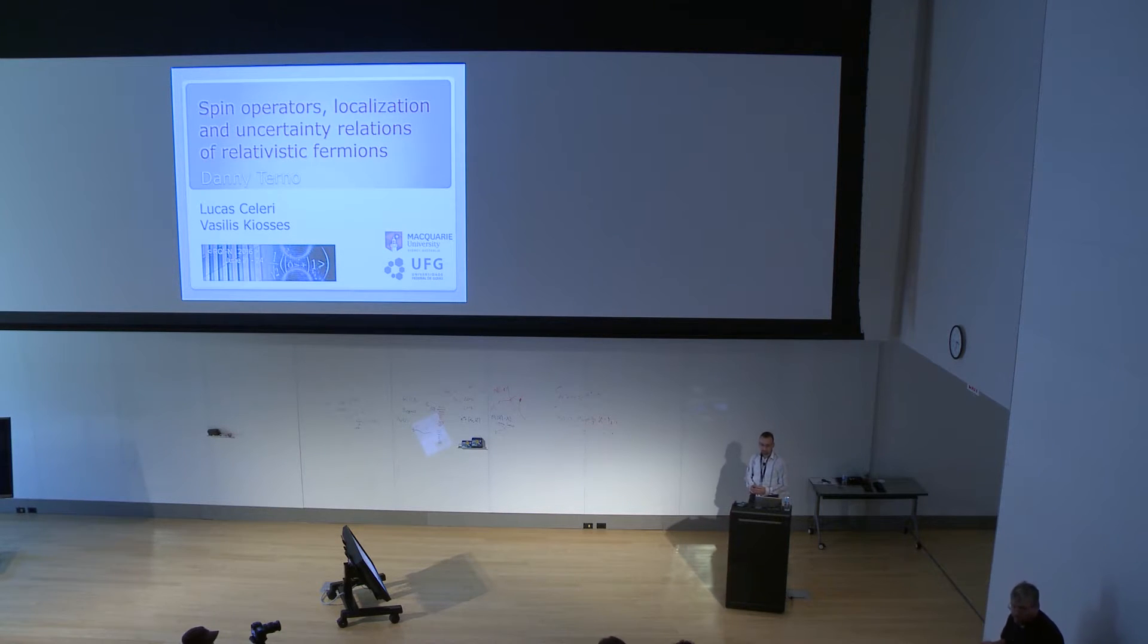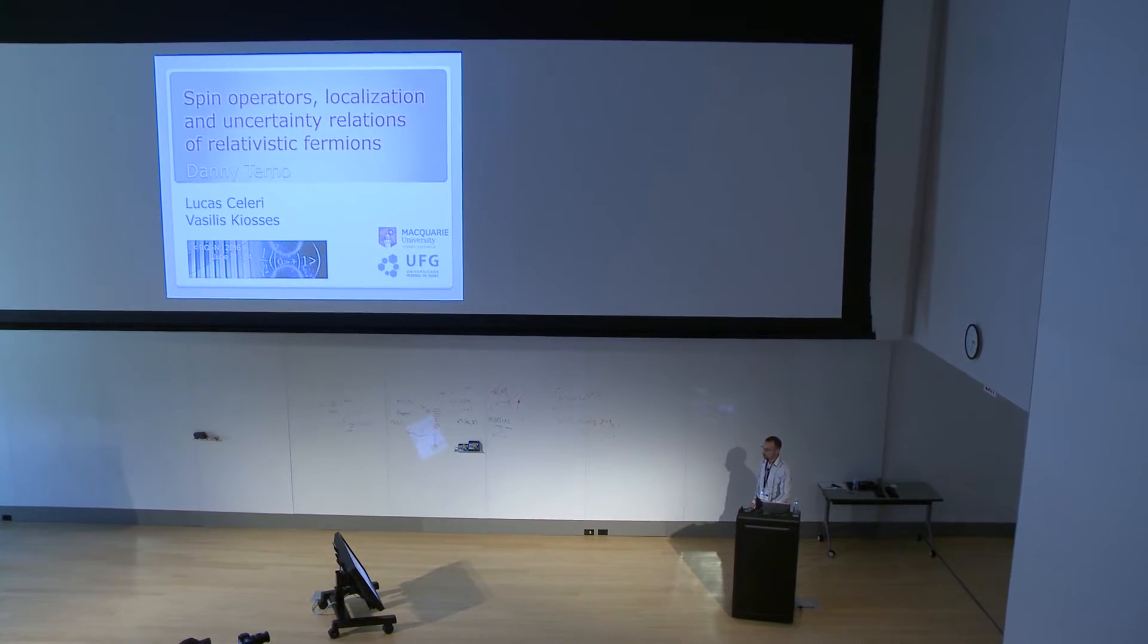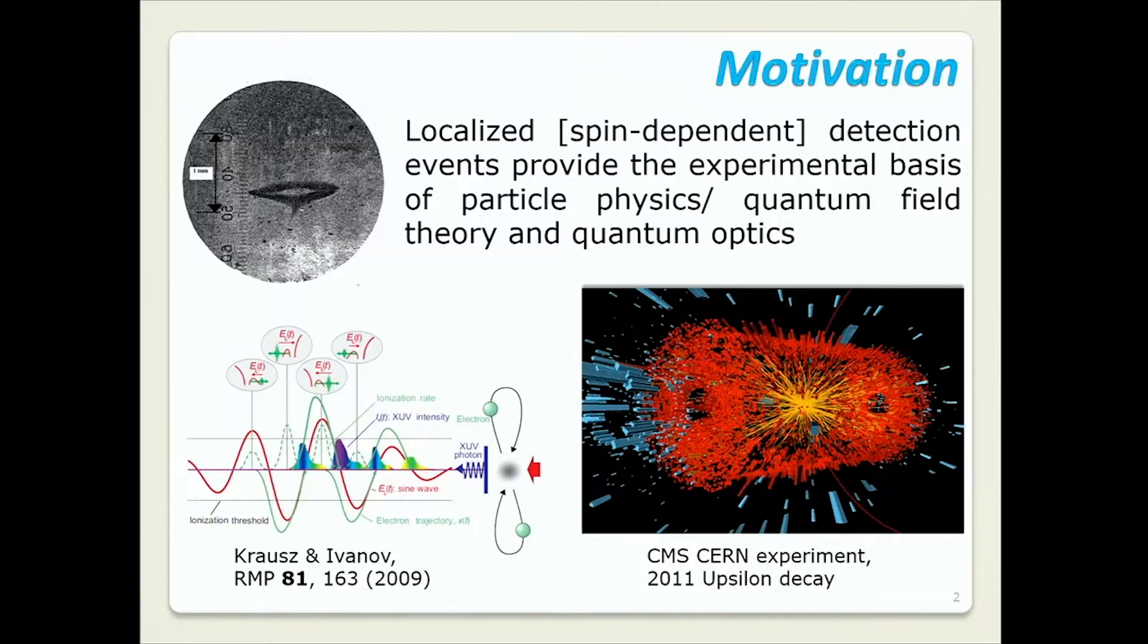So today I'd like to talk about a couple of things, some of them are relatively old but maybe I even should have known them a long time before, and I'll try to share these things with you. So it's spin operators, localization and uncertainty relations for relativistic fermions. First let's start with motivation.